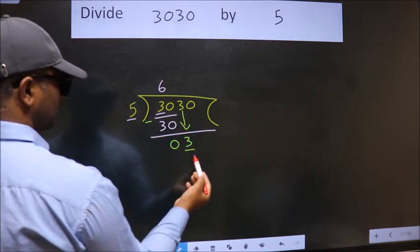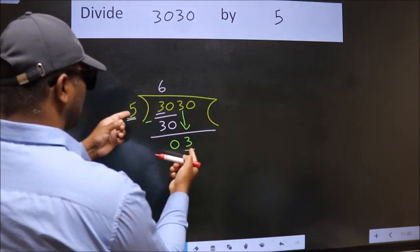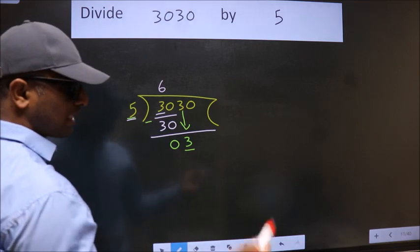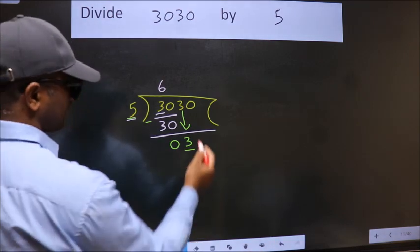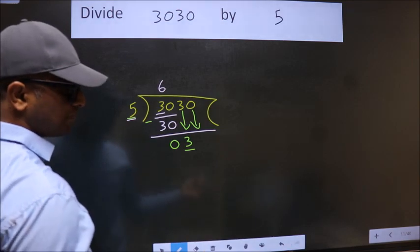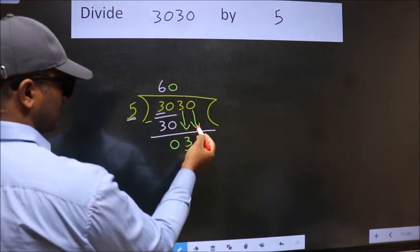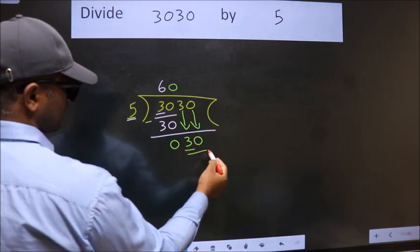Now, here we have 3. Here 5. 3 is smaller than 5. So, we should bring down the second number. And the rule to bring down second number is put 0 here. Then only we can bring down this number. So, 30.